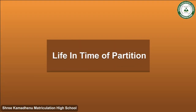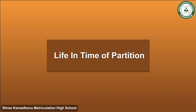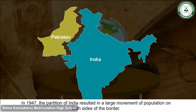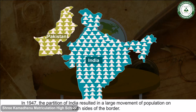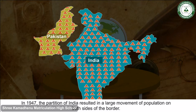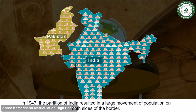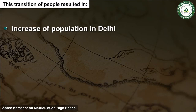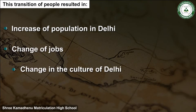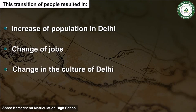Life in Time of Partition: In 1947, the partition of India resulted in a large movement of population on both sides of the border. This transition of people resulted in an increase of population in Delhi, a change of jobs, and a change in the culture of Delhi.